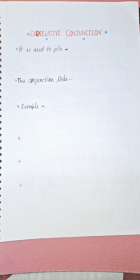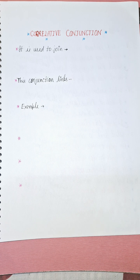But first of all, we will talk about what is a conjunction. In simple words, conjunctions are the words which connect other words, phrases, or sentences. That is the definition of conjunctions.